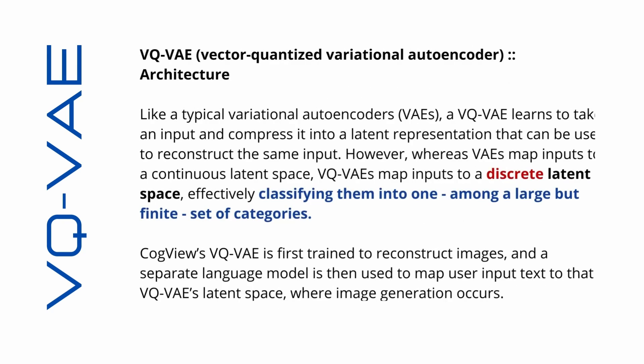The architecture maps inputs to a discrete latent space, effectively classifying them into one among a large but finite set of categories. You may have also heard of CogView — it was first trained to reconstruct images, and then a separate language model was used to map user input text to the latent space where image generation occurred.